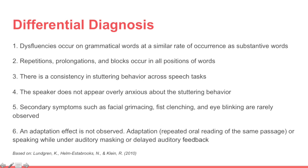Additionally, the adaptation effect is not observed in this population. The adaptation effect refers to the reduction in stuttering over successive oral readings of the same material. This population also does not show decreased stuttering when speaking under auditory masking or delayed auditory feedback. Other characteristics that may accompany this population include age of onset, circumstances of onset, and no family history — it is usually isolated cases of stuttering following a neurological event.